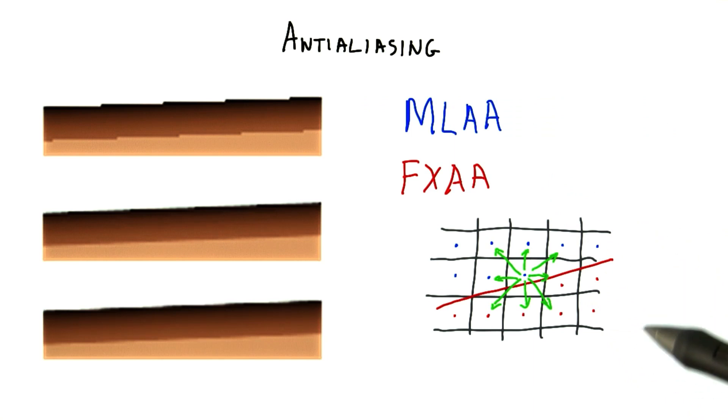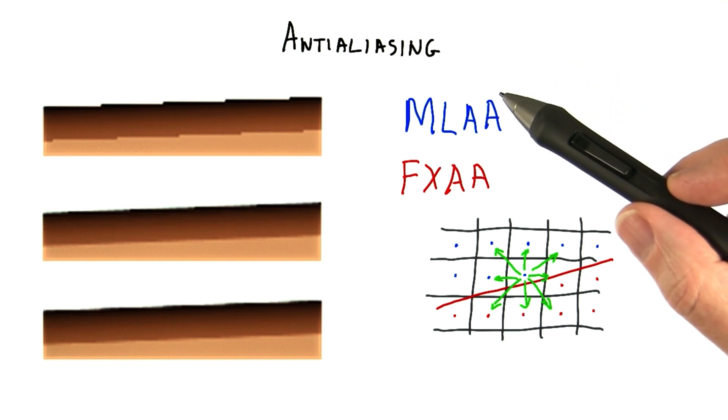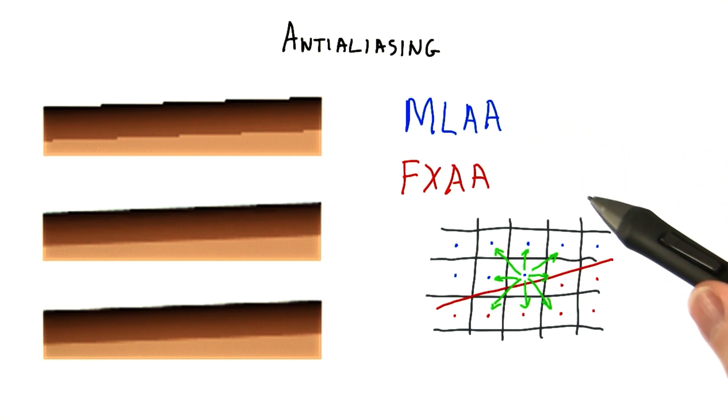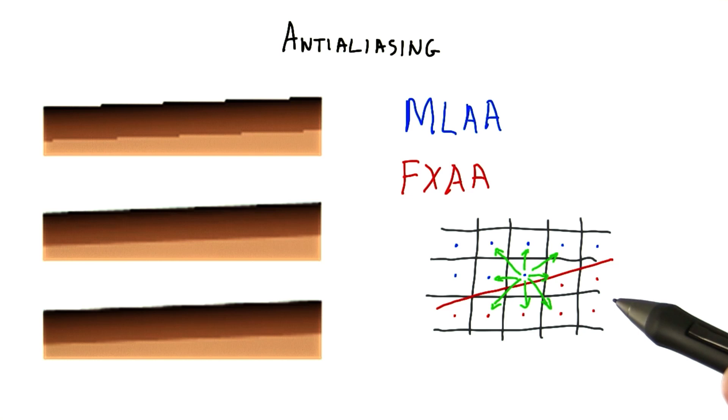Another class of algorithms for anti-aliasing perform filtering on the image. This is a relatively new class of techniques. The first of these, called morphological anti-aliasing, or MLAA, was developed in 2009. The idea is to use the existing image, and possibly other data, to detect sharp edges. When these are found, try to smooth just these edges by using nearby pixels.